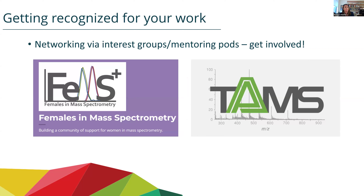I have also found that networking via interest groups or mentoring pods is a really great way of meeting people. I'm very active in FEMS — Females in Mass Spectrometry — where we have mentoring pods, usually groups of eight to twelve people. You really get to know those people very well over the course of the academic year. If there's a graduate student in that group that I think is good for an award, I can recommend that to them. There are also many different types of these groups — TAMS is the Triangle Area Mass Spectrometry Discussion Group; there are similar groups in Boston, the Bay Area, and the Washington D.C. area. That's another opportunity to use your local network to build up your broader network and increase your visibility.